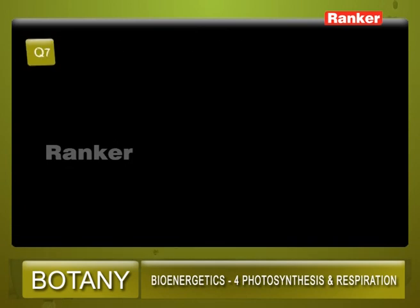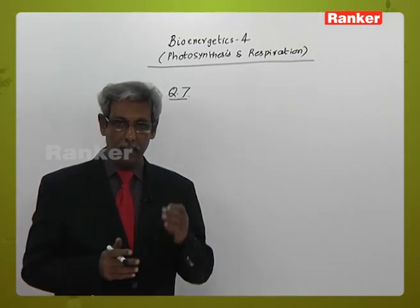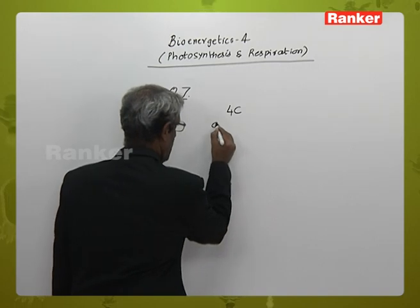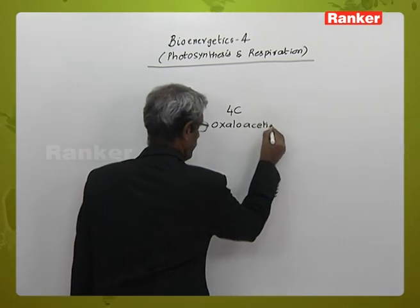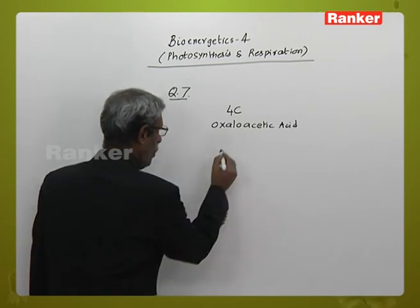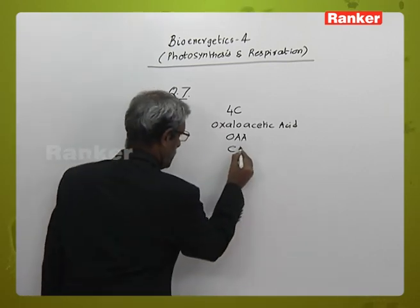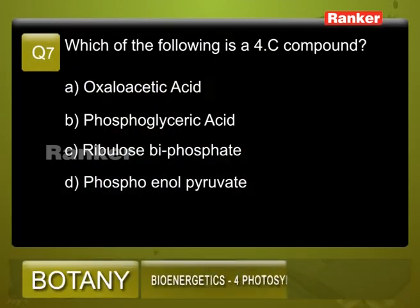Question number 7: Which of the following is a 4-carbon compound? A: oxaloacetic acid, B: phosphoglyceric acid, C: ribulose biphosphate, D: phosphoenol pyruvate. The 4-carbon compound formed in the C4 pathway — the marker acid — is oxaloacetic acid (OAA), which is an important first component in the 4-carbon pathway, especially in C4 photosynthesis. Hence the answer is A — oxaloacetic acid.